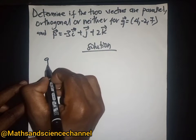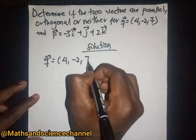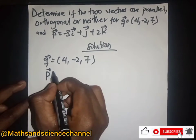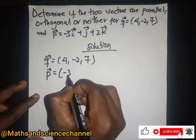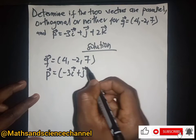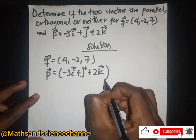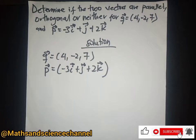We are given vector q here being 4, -2, and 7, and vector p here being equal to -3i, then we have j, and 2k.